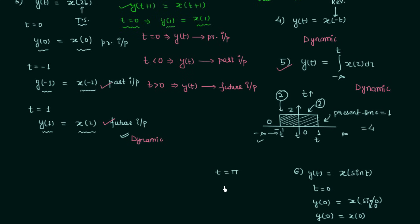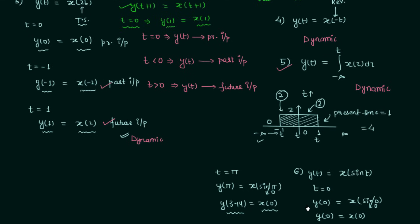Let's make t equal to π. We have y(π) = x(sin π) = x(0), since sin π = 0. So when t = π (approximately 3.14), the present output y(3.14) depends on x(0). Relative to 3.14, the time instant 0 is a past instant. So the present output is dependent on the past input, and therefore the system is dynamic in nature.